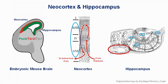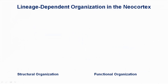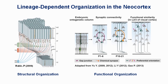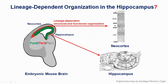It is evident that the lineage relationship plays a critical role in defining the structural and functional organization of the neocortex, which brings up a very interesting question: what is the role of lineage relationship in the hippocampus?